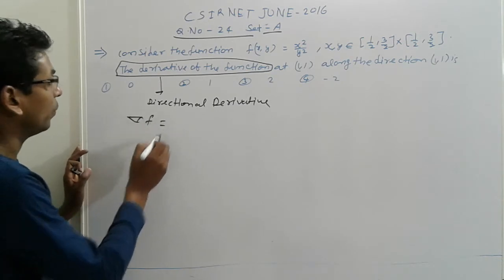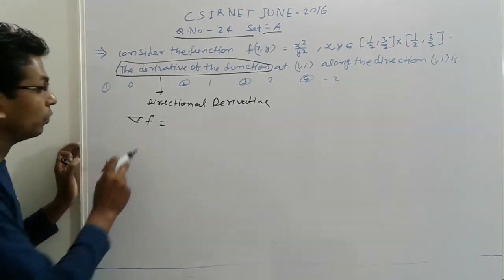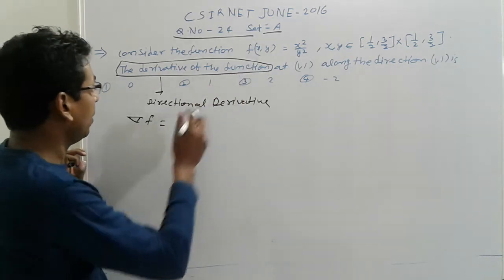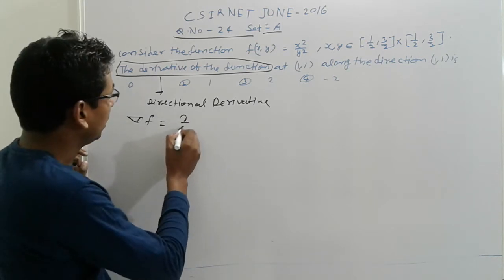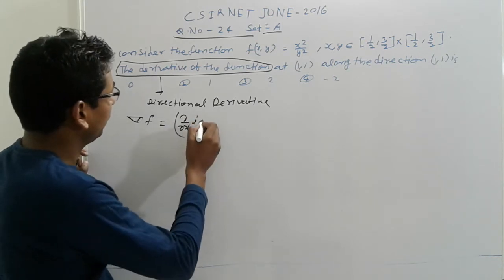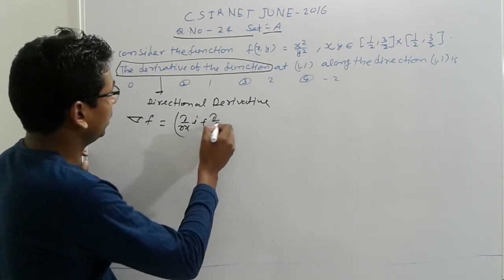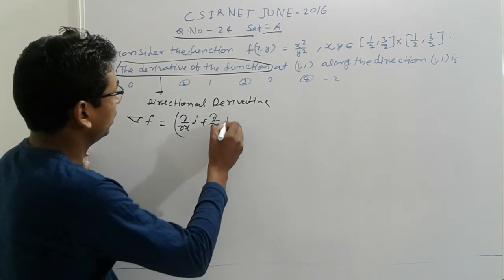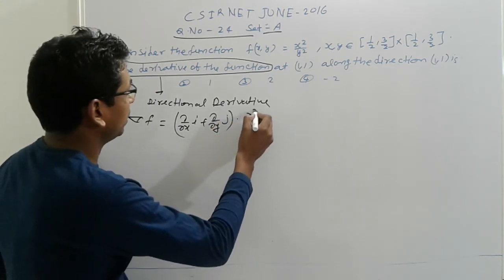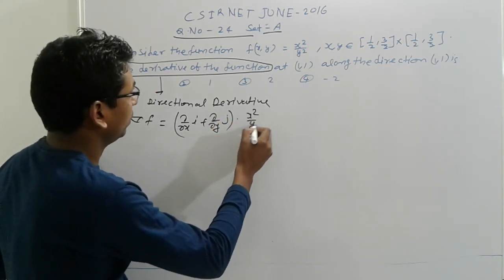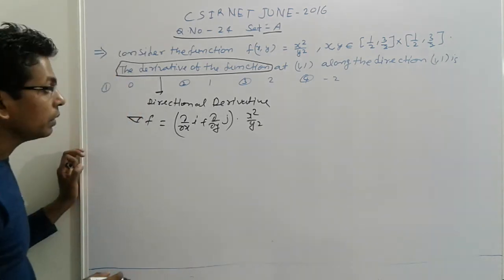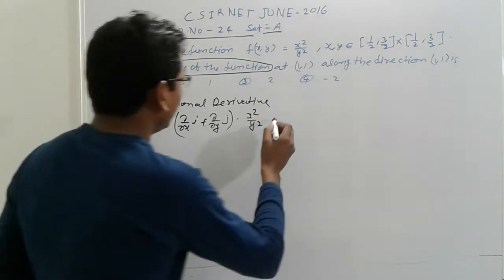The directional derivative is del f, where del is the gradient operator: (del/del x)i + (del/del y)j, applied to f which equals x squared upon y squared.